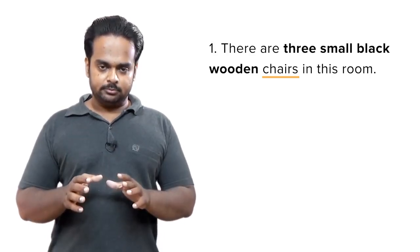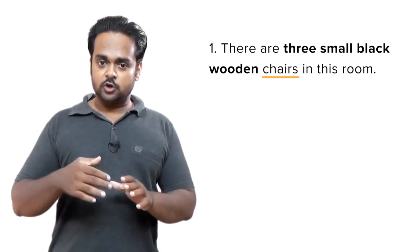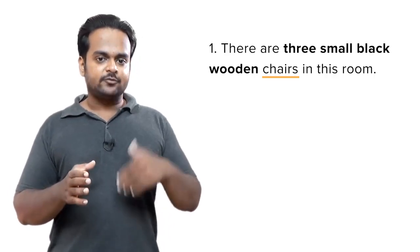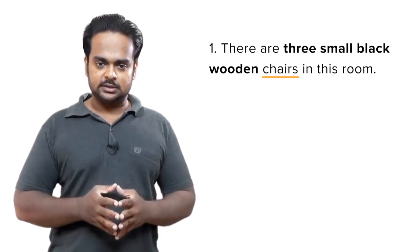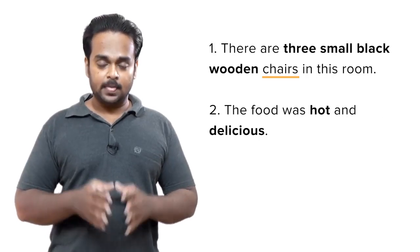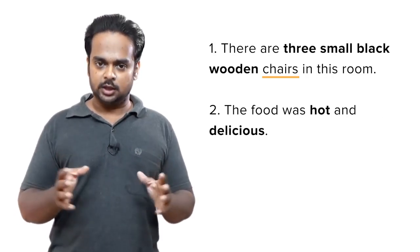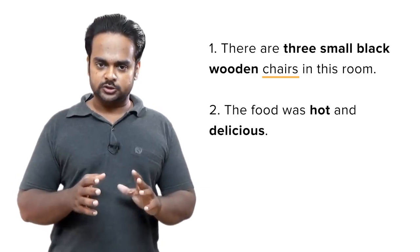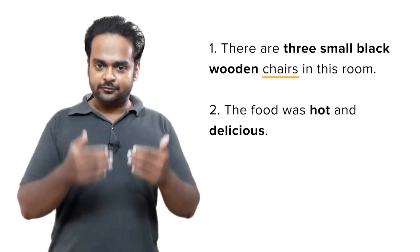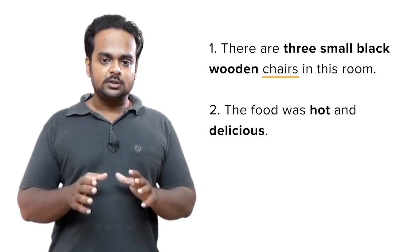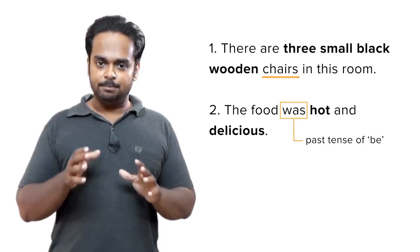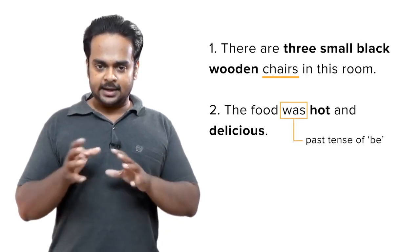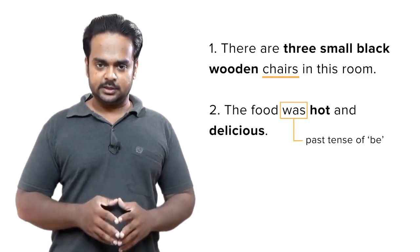Now in this example the adjectives occur before the noun, but they can also appear after the noun or pronoun, like in this example: the food was hot and delicious. Here the adjectives hot and delicious appear after the noun food, and notice that we use the linking verb be — past tense was — to connect the noun and the adjectives.